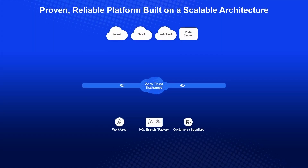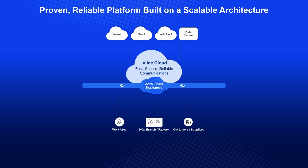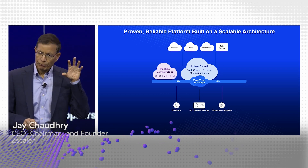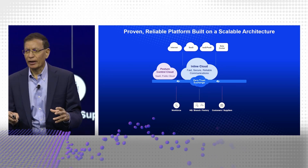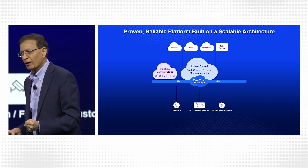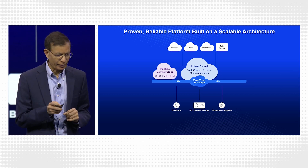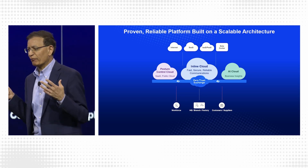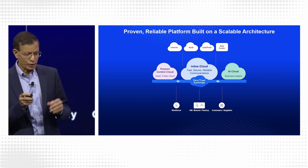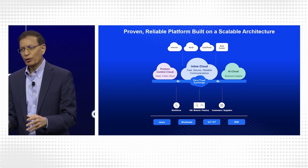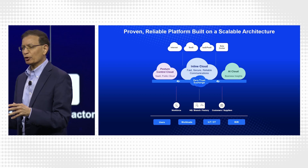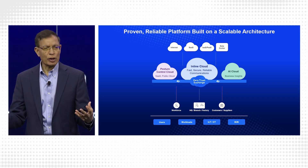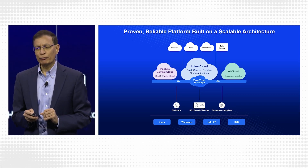Our platform is growing and expanding. We started an inline cloud where we could inspect things to keep you safe — right party talking to right party. Then we built posture control for SaaS data and public cloud data, making sure they are not misconfigured and have the right permissions. With all that telemetry we have been collecting, we now have an AI cloud you're building a lot of things on, made available not just for users or workloads, but IoT and B2B. All these entities need to talk to each other, and we are leveraging the same core Zscaler technology to make it happen.